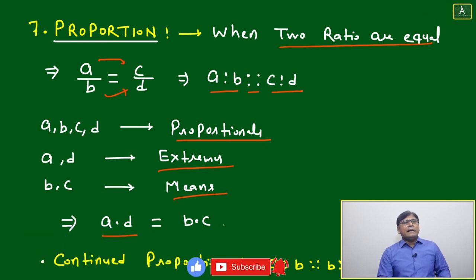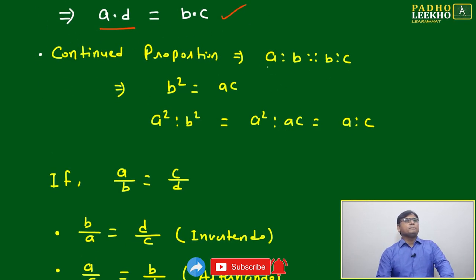a times d will always equal b times c. This is cross multiplication – because a·d equals b·c.